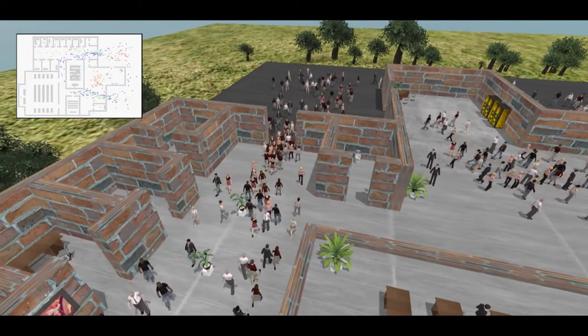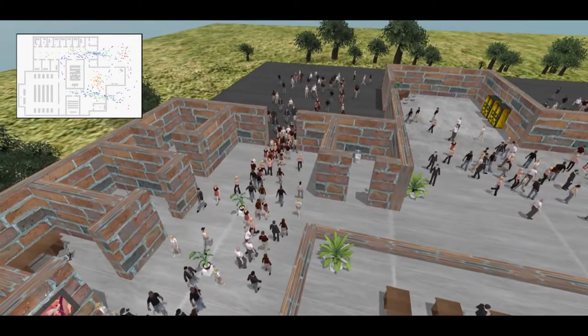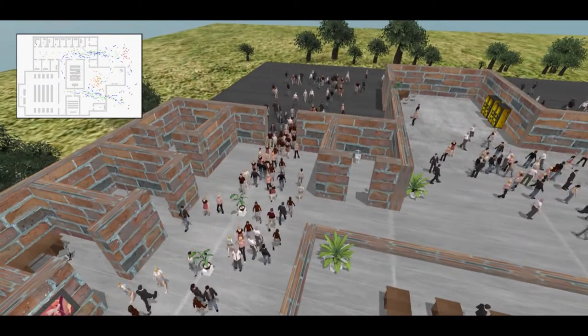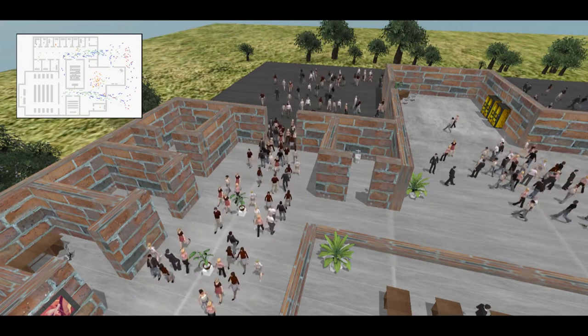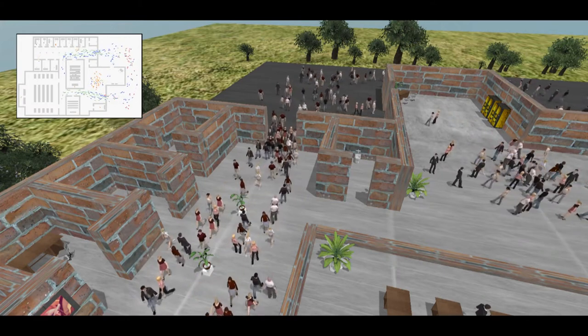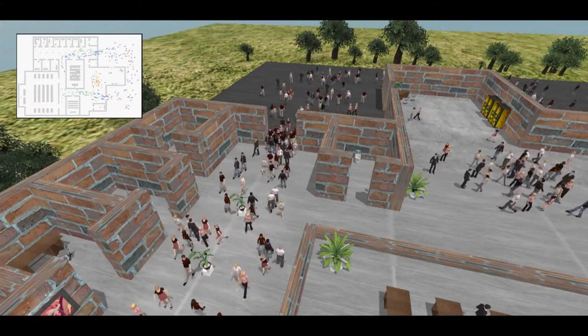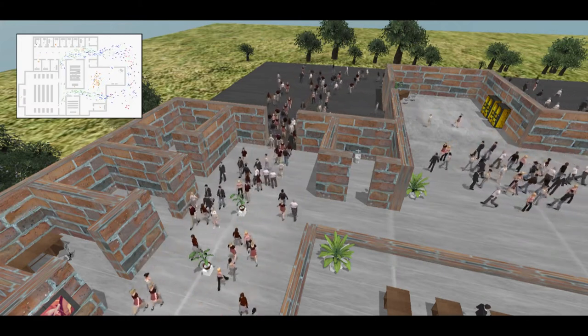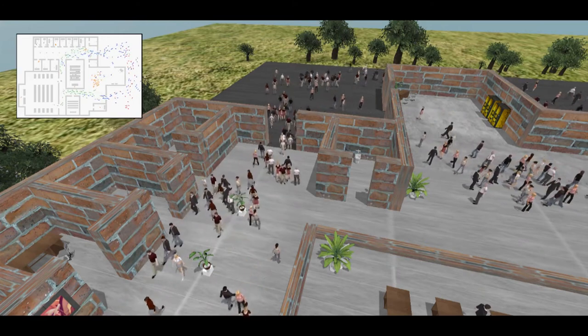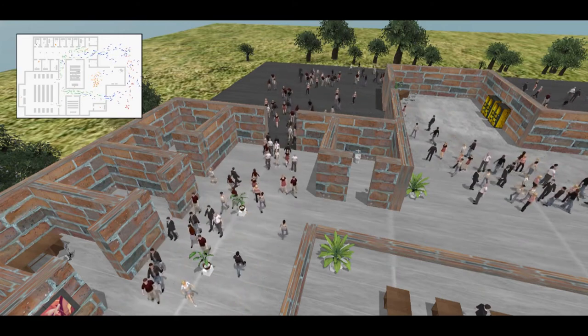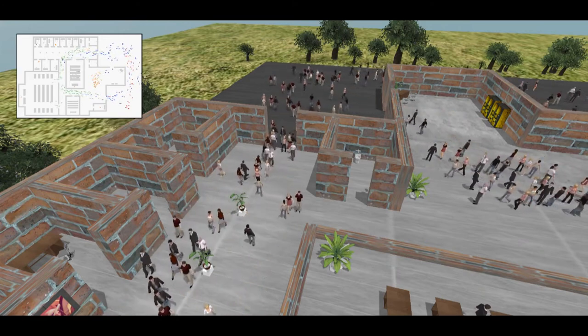In high-density scenarios, like this narrow doorway, coordinated behavior takes over. The increased coordination enhances the formation of lanes and helps maintain a smooth crowd flow.